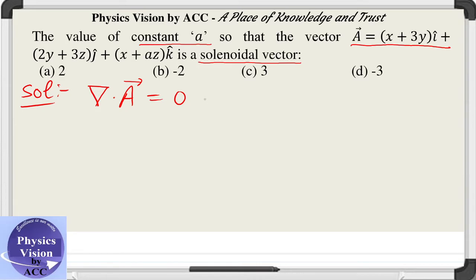So what we will do is take the divergence of this given vector and put it equal to zero. This will be done by taking the dot product of i with i, j with j, and k with k.